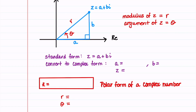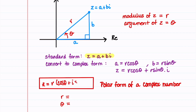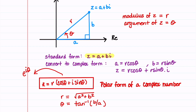To find the polar form of a complex number, we begin with the number in standard form. From our picture, we can see that a equals r cosine theta and b equals r sine theta. This gives us z equals r cosine theta plus r sine theta times i. Factoring out r, we write the polar form as z equals r times the quantity cosine theta plus i sine theta. You may recognize this as being equal to e to the i theta. R is the square root of a squared plus b squared, and theta is the inverse tangent of b divided by a.